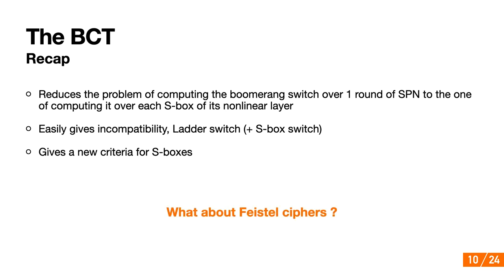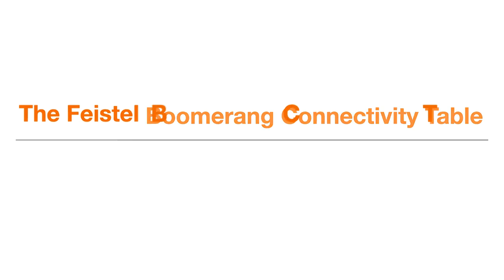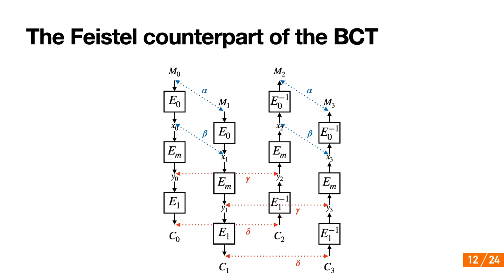We address this by introducing the FBCT, the Feistel counterpart of the BCT. As we're about to see, the boomerang behavior of an S-box in the Feistel case can be quite different from the SPN case. But first, let's define our table. We start by illustrating the theory on the generic Feistel, but it also works for variants like the type-1 and type-2 constructions.